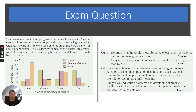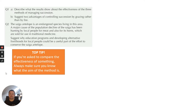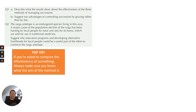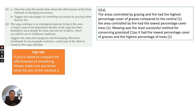Hopefully that is 10 minutes — if not, I'm going to insist you go back and try these questions. Let's have a look at the answers. This was about grazing and succession of an area of grassland that can result in forest. They're looking at ways to conserve the steppe landscape — which is the grassland — by different methods of control through grazing, mowing and fire. Question one: describe what the results show about the effectiveness of the three methods of managing succession.